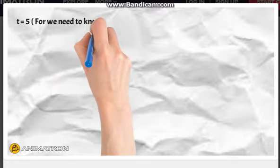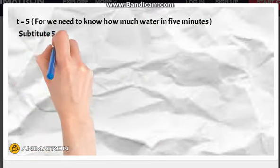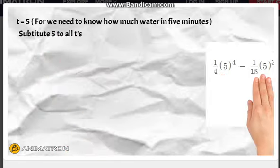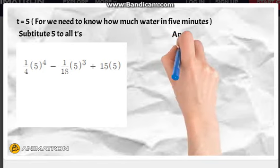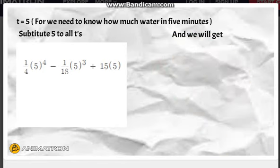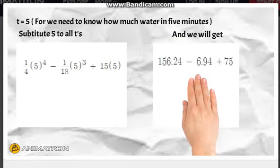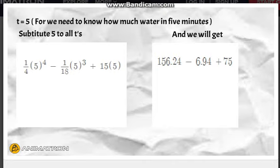Substitute T = 5 for we need to know how much water in five minutes. So we will get 1/4 times 5⁴ minus 1/18 times 5³ plus 15 times 5, and multiply and we will get 156.24 - 6.94 + 75.